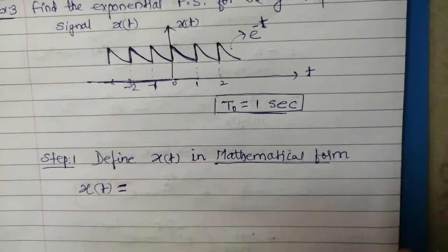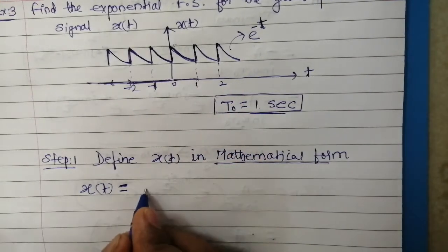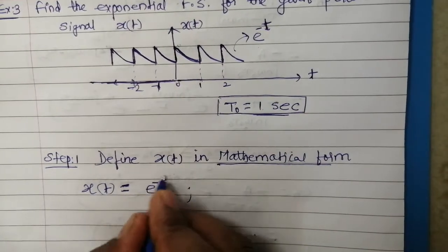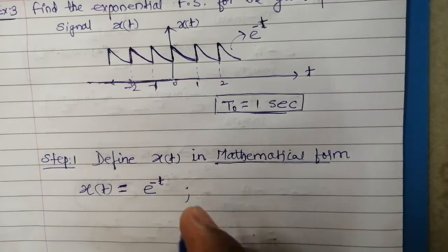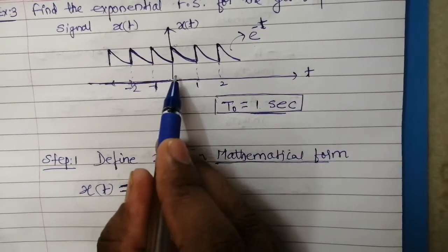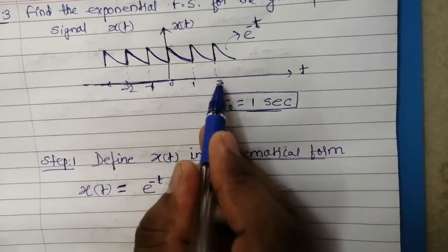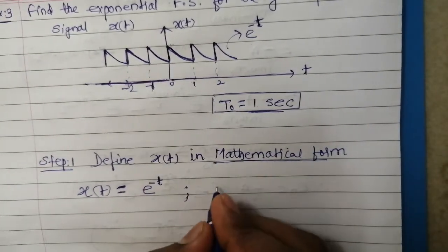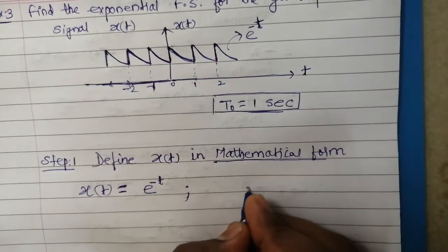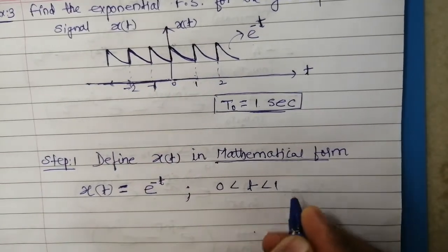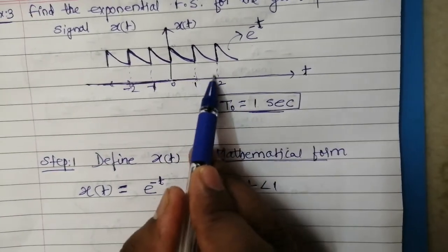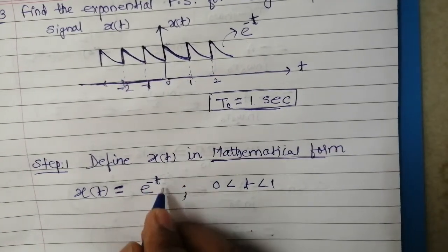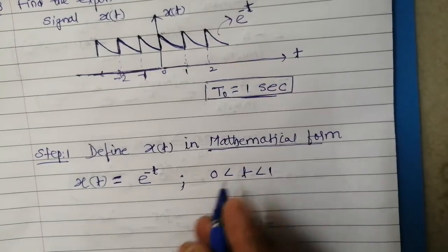So x(t) is already given — it is e raised to power minus t. This is the definition of x(t) for one time period. For the sake of convenience, let us assume the time interval from zero to one second. So x(t) equals e raised to power minus t, for the time interval zero to one second. This is your mathematical definition of the given x(t).